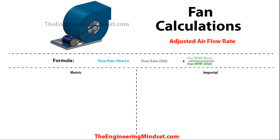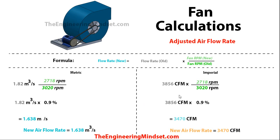Now if you have made any changes to the fans and motors, then we want to know what the adjusted airflow rate will be, and will it satisfy the design criteria? Or are we making a reduction in order to reduce the airflow rate to make some energy savings? We can use this formula: the new airflow rate is equal to the old airflow rate multiplied by the new fan RPM divided by the old fan RPM. Sticking these figures in — we know the old flow rate and what the adjusted and original RPMs are — this brings us to 1.638 meters cubed per second, or 3,470 cubic feet per minute.